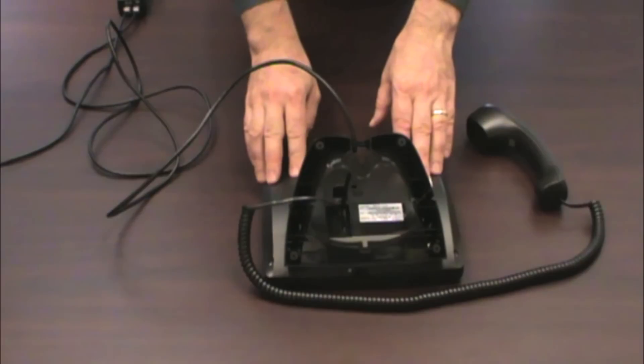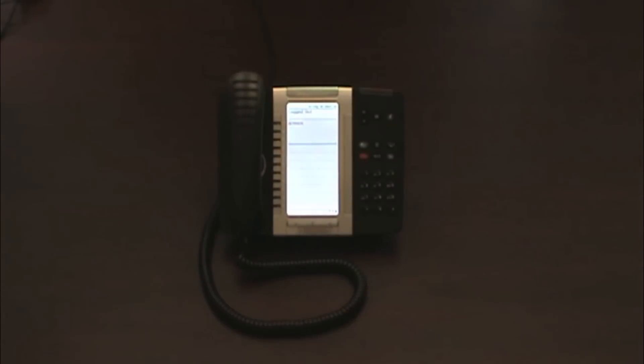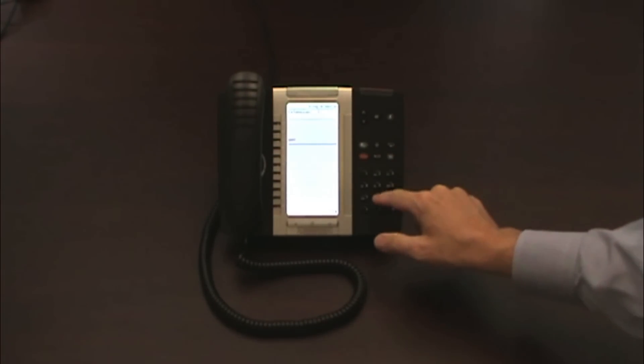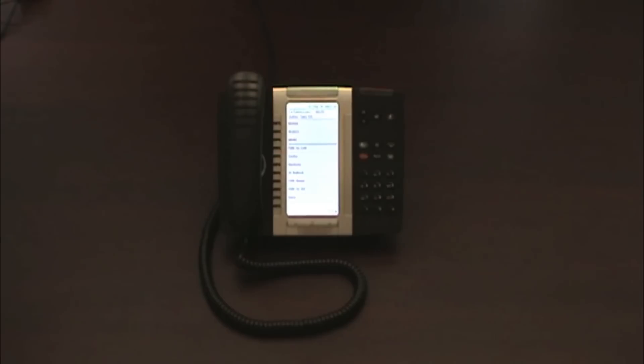When the software downloads, the phone will be ready to activate. When the screen displays activate, you can activate the phone by pressing the button, and then you will have received an email with your extension and with your PIN. Enter your extension, followed by your PIN, and then follow your PIN with the pound sign. Now your phone is ready to make and receive calls.